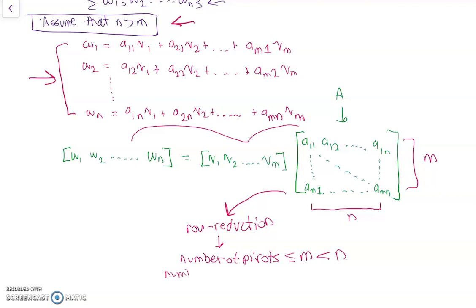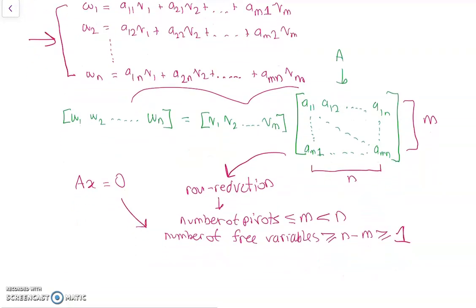And so the number of free variables when we solve the homogeneous equation AX equals 0, the number of free variables when you do row reduction will be at least N minus M, and this is going to be at least 1, because N is greater than M. So since we have at least 1 free variable, it means there exists a non-zero and non-trivial solution to AX equals 0.